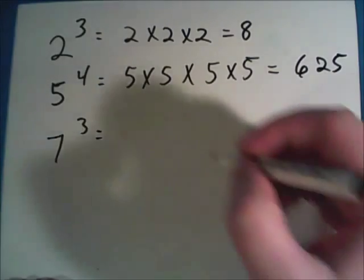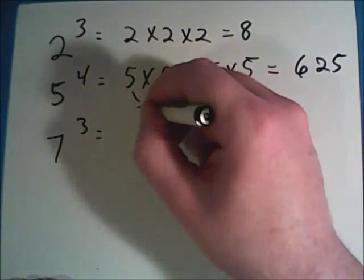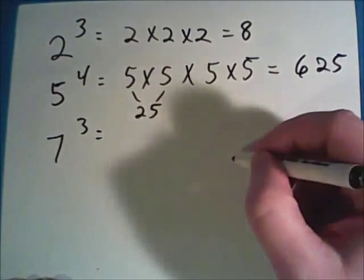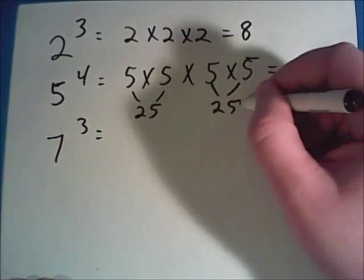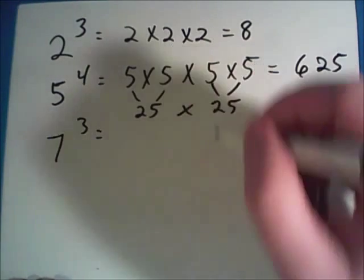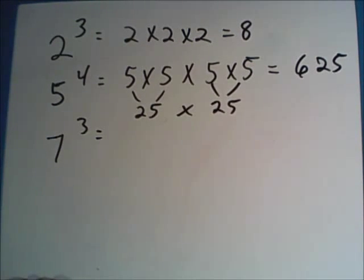You could also break this down and do the first two, five times five to be twenty-five, and do the second set giving you another twenty-five, and take these two numbers and multiply them so that it's twenty-five times twenty-five. Both ways will get you to your final answer of six hundred and twenty-five.